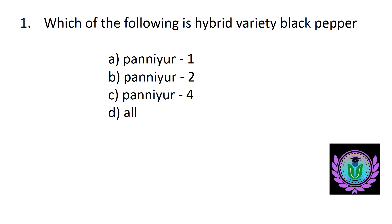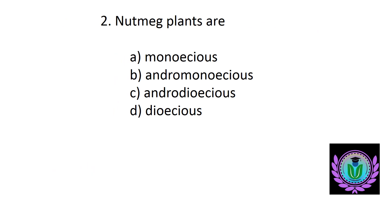Which of the following is a hybrid variety of black pepper? Option A: Panniyur 1, B: Panniyur 2, C: Panniyur 4, D: All of the above. The answer is option A, Panniyur 1.